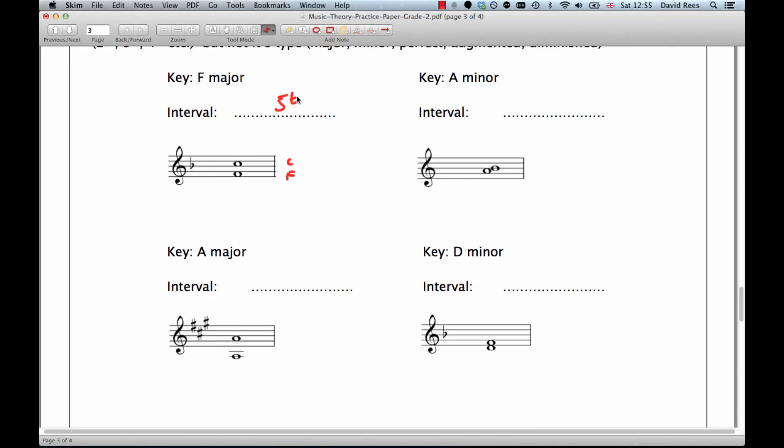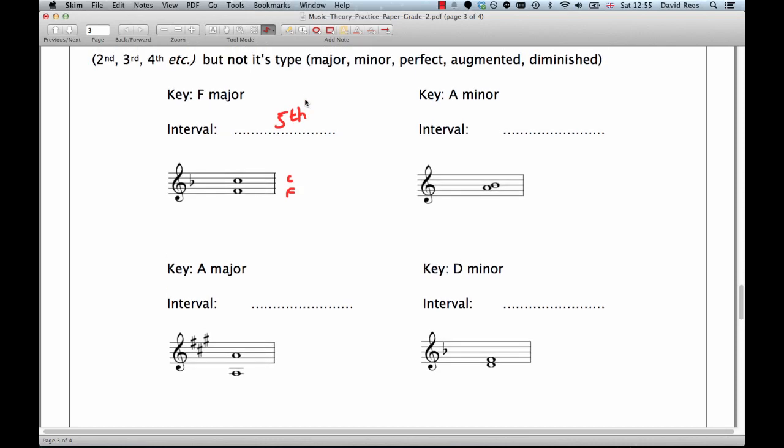Now, as the question said, we don't need to work out what kind of fifth it is, whether it's a diminished fifth, a perfect fifth, or whatever. We just need to write the thing in. So that's all we need to do for this kind of question. It's a nice introduction, I guess, to measuring intervals.